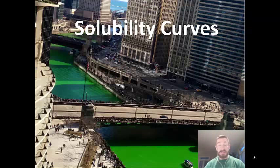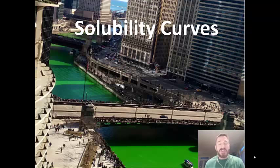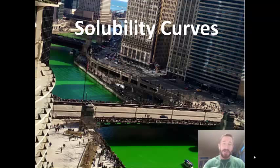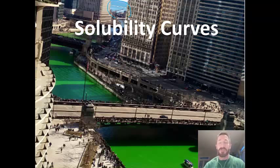Today we're going to learn about the effect of solubility on different substances, and to do that, we're going to look at solubility curves. What I have before us is a picture of the Chicago River. It's St. Patrick's Day weekend in Chicago, and a tradition is to dye the river green, which has a little bit to do with solubility. In the background, we see Lake Michigan, which has a different color than the Chicago River.